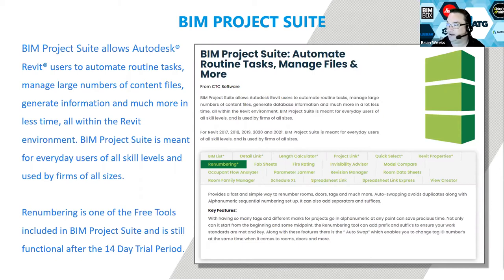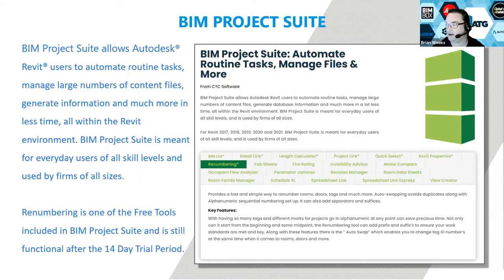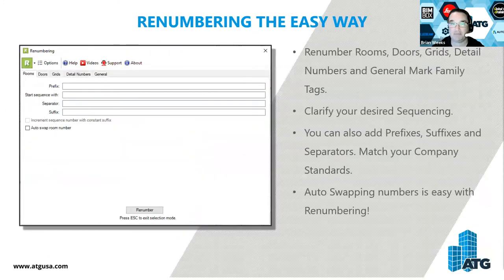If you'd like to see a demo of any of the CTC tool suites, contact your ATG sales representative or visit atgusa.com. The renumbering tool is the easy way because it pulls up a window from within Revit and allows you, through multiple tabs, to renumber rooms, doors, grids, detail numbers, and general mark family tags.